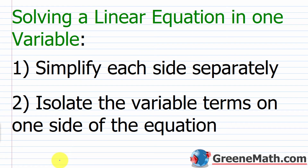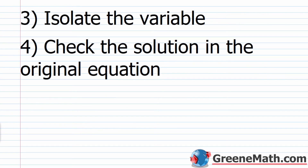Now let's talk about the procedure to solve a linear equation in one variable. Your main goal is to isolate the variable — you want X, Y, Z, or whatever the variable is on one side, and a number on the other. Steps: first, simplify each side separately by clearing parentheses and combining like terms. Second, isolate the variable terms on one side using the addition property of equality. Third, isolate the variable using the multiplication property of equality. Finally, check the solution in the original equation.